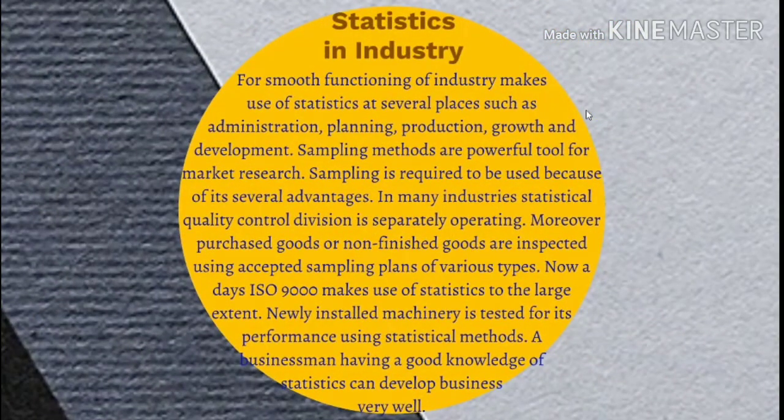Scope of statistics in industry: for smooth functioning, industry makes use of statistics at several places such as administration, planning, production, growth, and development. Sampling methods are a powerful tool for market research. Sampling is required to be used because of its several advantages. In many industries, a statistical quality control division is separately operating.